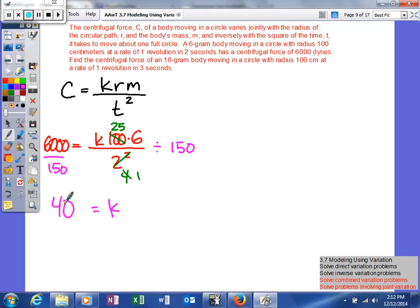The units you can figure out - I won't waste your time at this point. But we get our constant to be 40. Now we're going to use that K to help us predict. We'll write our formula: C equals 40 RM over t squared.